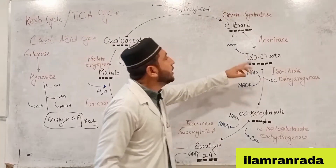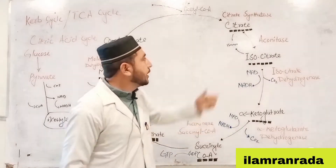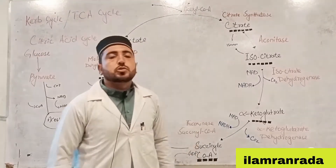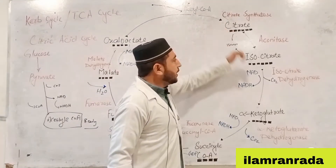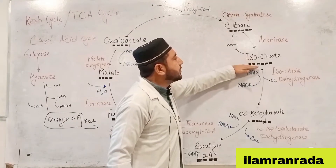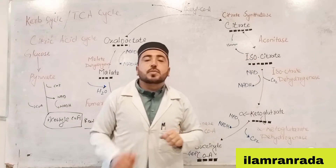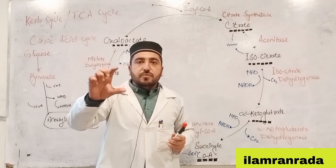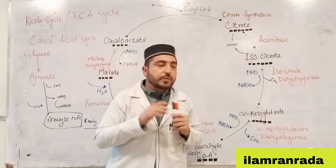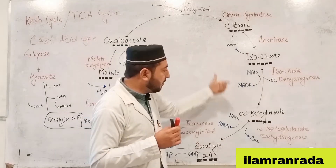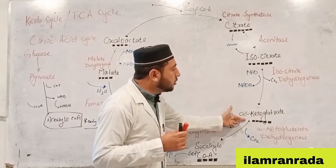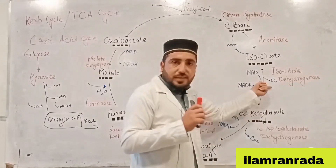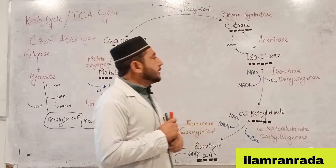Citrate is then converted to isocitrate by the enzyme aconitase. This is a six-carbon compound isomerization — the six-carbon compound citrate is converted to its isomer, isocitrate. Isocitrate is further oxidized and decarboxylated to alpha-ketoglutarate, a five-carbon compound, releasing carbon dioxide.